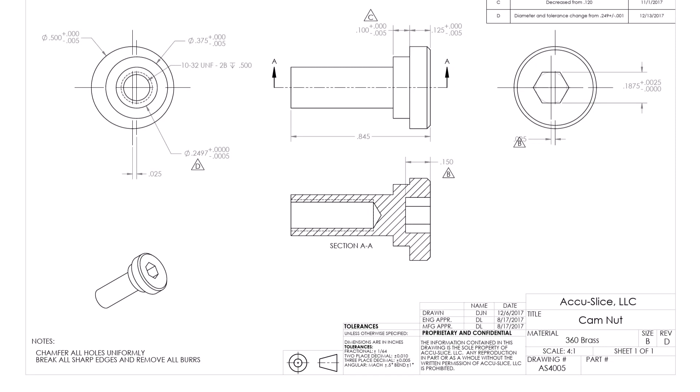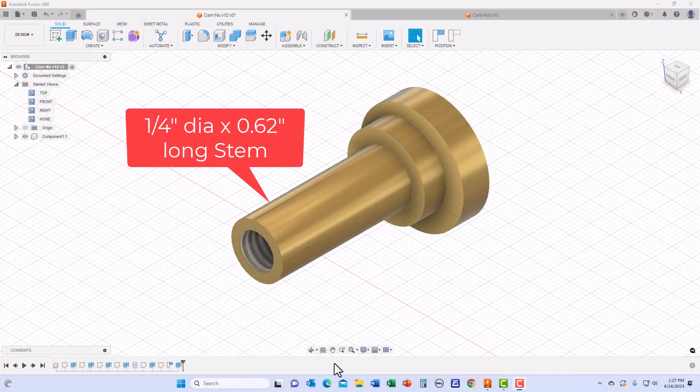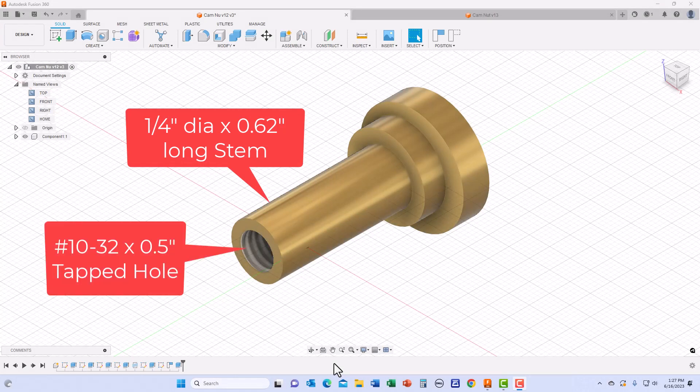This is a detailed drawing of the offset cam nut for the AccuSlide carriage. I took the dimensions and other information from this cam nut drawing and produced the cam nut in the design module of the Fusion 360 software. The stem portion of the cam nut is 1¼ inch in diameter by 0.62 inches long and contains a center drilled and number 10-32 tapped hole which is 0.5 inches deep.